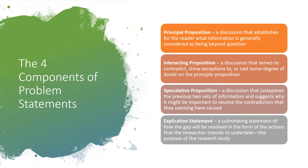When you think about writing your problem statement, there are four main components. Your principal proposition is a discussion that establishes for the reader what information is generally considered as being beyond question — what's our first fact, our first variable. The interacting proposition is the variable that conflicts with that — a discussion that serves to contradict or show exceptions to or cast some degree of doubt on the principal proposition. Your speculative proposition then juxtaposes those previous two sets of information and suggests why it's important to resolve this issue — here's our first idea, here's our second idea that conflicts with it, here's our third idea which tells us why that issue matters and for whom it matters — the 'so what, who cares.' And then finally, your explicative statement or your problem statement.